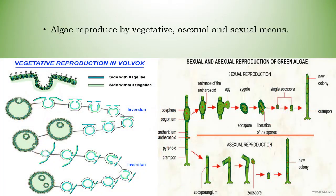Algae reproduce by vegetative, asexual, and sexual means.